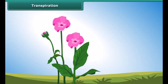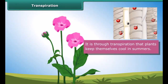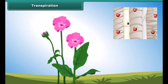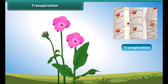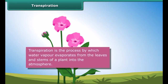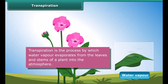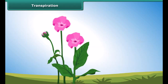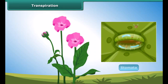An important function of the leaf is to keep the plant cool in summers. This is accomplished through transpiration. Transpiration is the process by which water vapor evaporates from the leaves and stems of a plant into the atmosphere. Small pores called the stomata on the underside of the leaves facilitate transpiration.